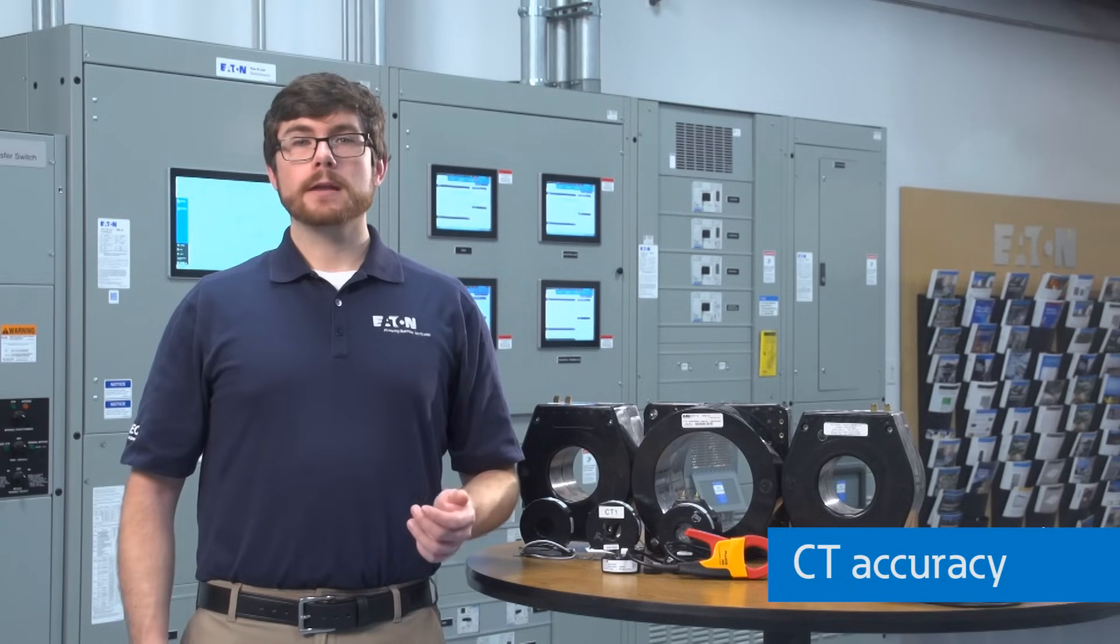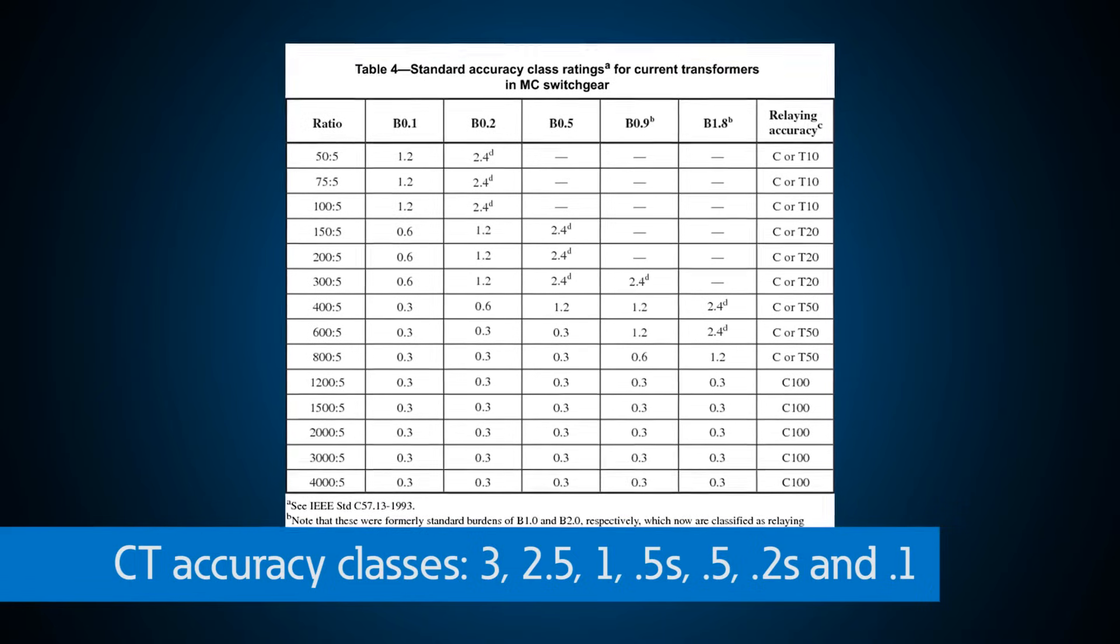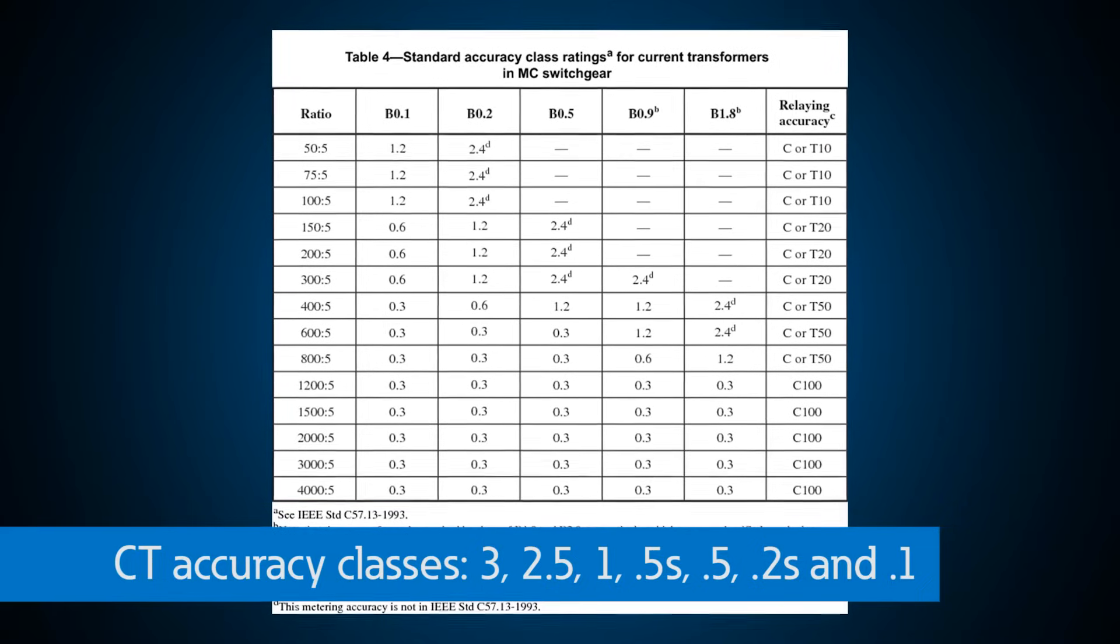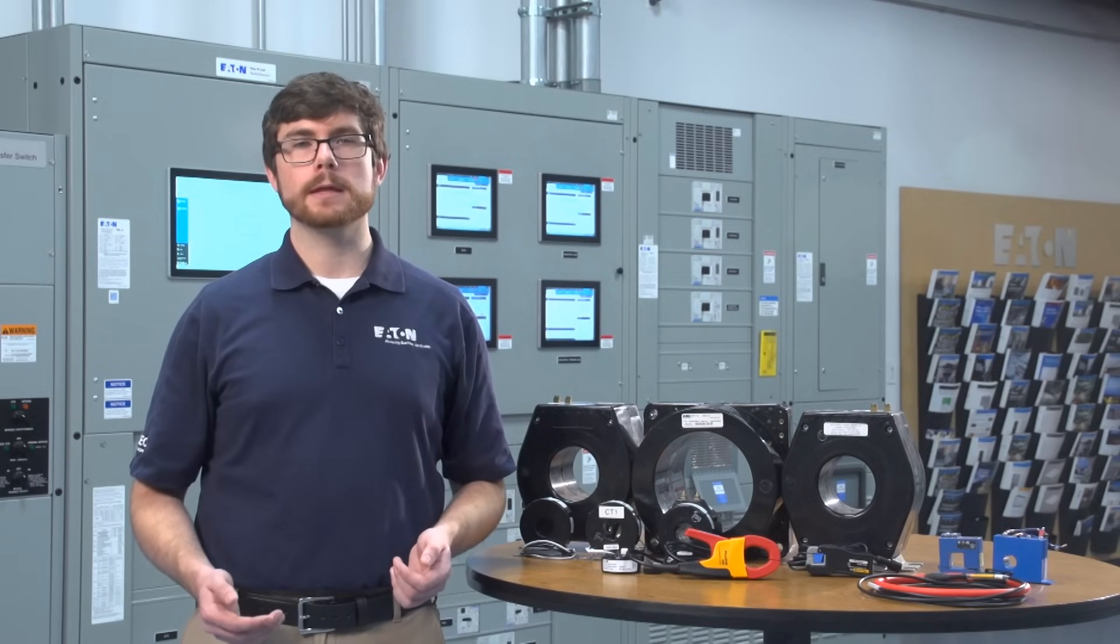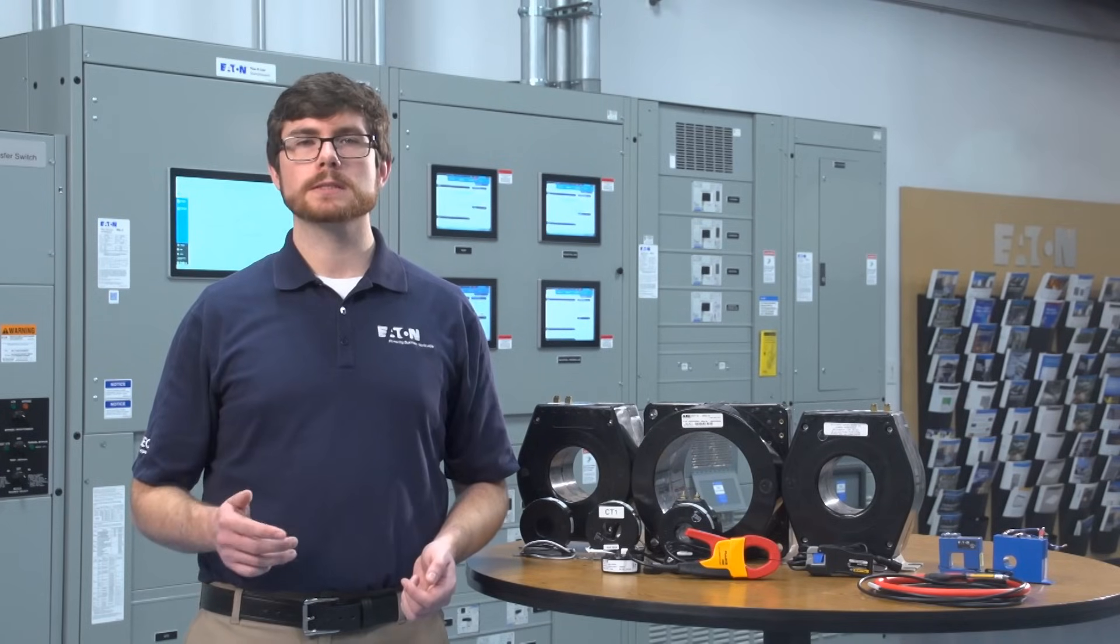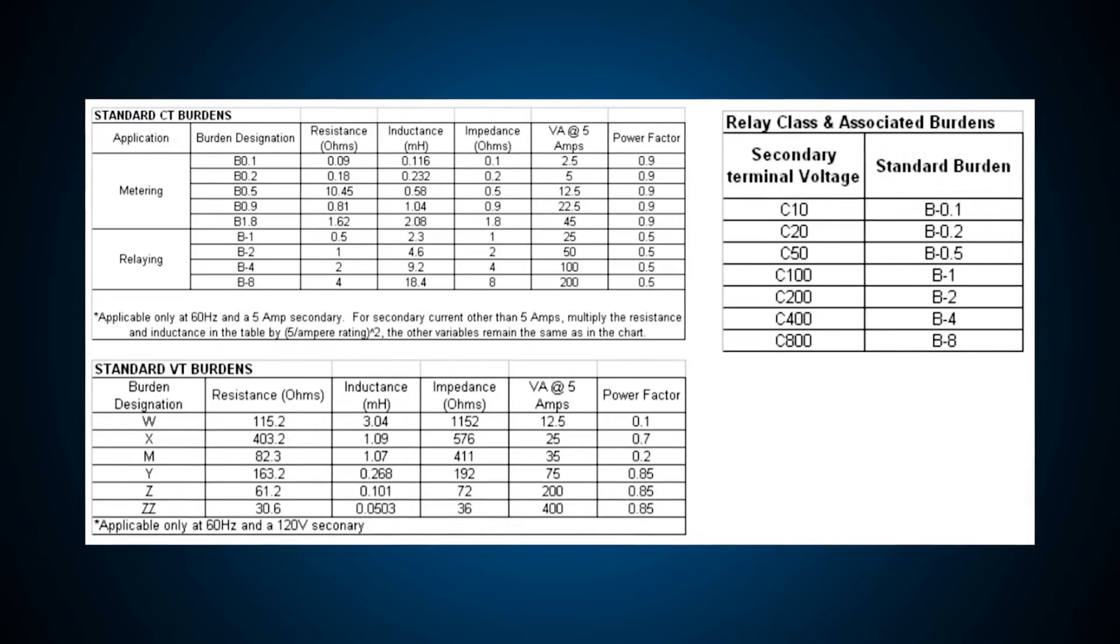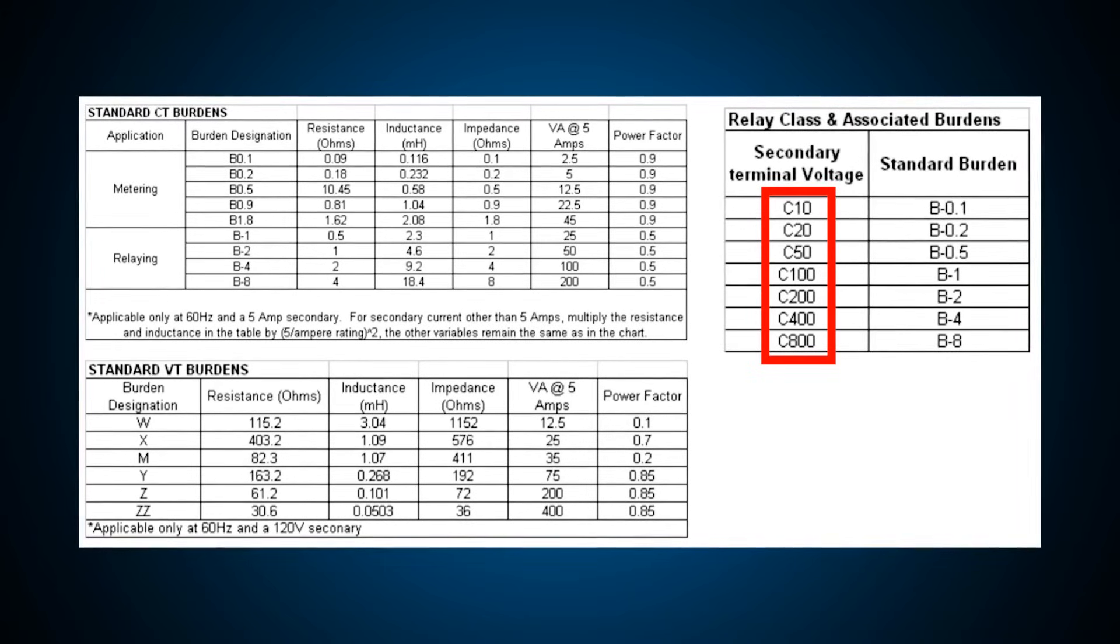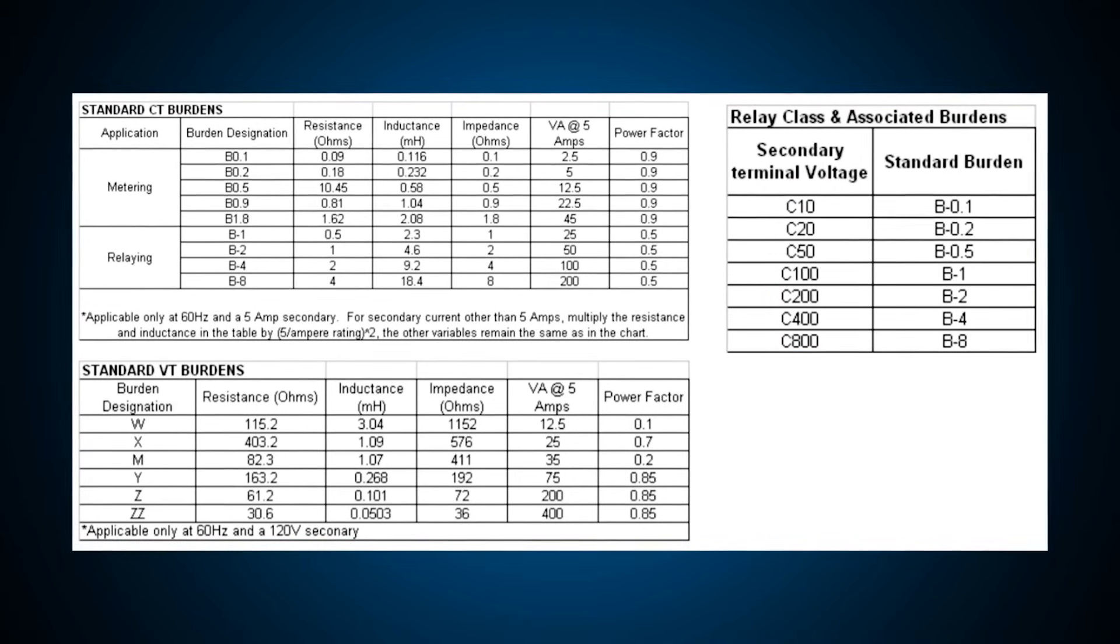CTs come in a variety of accuracy classes. For example, the ratio of primary to secondary current error of a class 1 CT is 1% at rated current. A 0.5 rated CT is 0.5% or less. The accuracy of these devices is very important for protective relaying and metering. They have specific requirements for overload currents in excess of the normal rating to ensure accurate performance of the relays during system faults. A current transformer can have a range of ratings from C10 to C800, which is related to the secondary winding output voltage capabilities and VA rating of the CT.